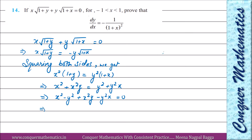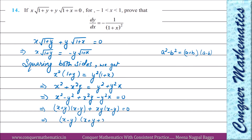First two terms mein maine algebraic identity lagayi: a² - b² = (a+b)(a-b). Toh yeh ho gaya (x+y)(x-y). Aur next two terms mein se maine xy common le liya, toh mere paas raha (x-y). Ab dono terms mein (x-y) common factor hai, toh maine use common le liya. Kyunki x aur y do variables hain — agar x = y ho gaye toh question ki existence khatam ho jaati hai — toh (x-y) ≠ 0 assume karke hum is factor ko cut kar sakte hain.